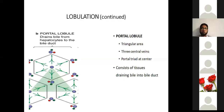In the center, we have the portal triad and we connect three central rings with each other. This triangular area is the portal lobule. The portal lobule is more concerned with the flow of bile.